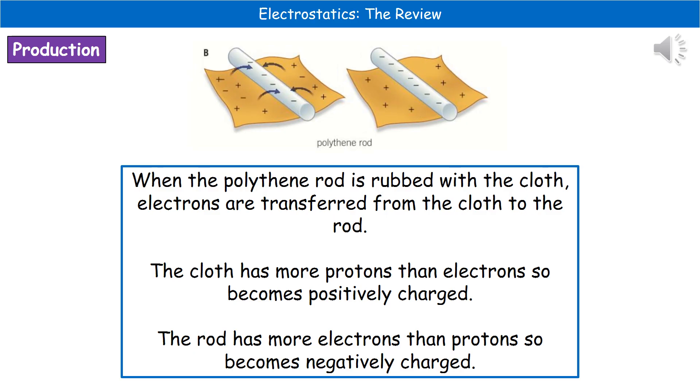In the second example, we've got a polythene rod still with the same cloth. What we find here is that the opposite is happening. The electrons are being transferred from the cloth to the rod. As a result, the cloth becomes positively charged because it's got more protons than electrons. Because the rod has gained extra electrons, it's got more electrons than protons, so it becomes negatively charged.